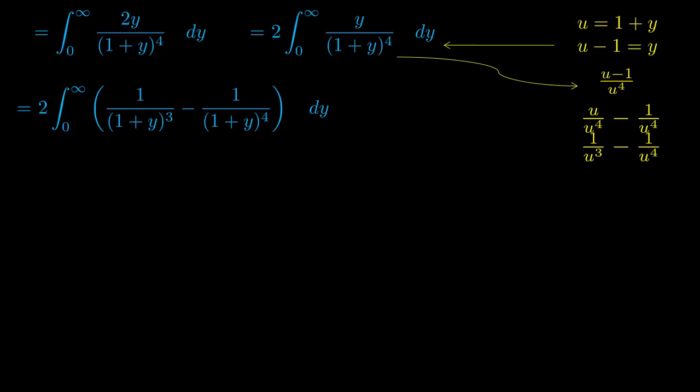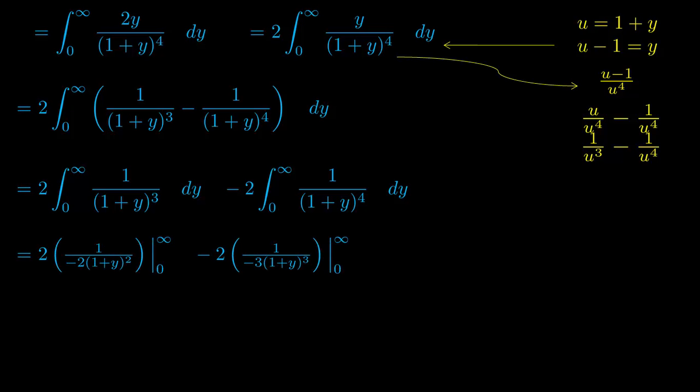Computing this is much easier now. You can split the integrals into two parts and solve them individually. Once you're done substituting the values back into the equation, you'll end up with 2 times (0 plus 1 half) minus 2 times (0 plus 1 third). That gives you a probability of one third, or 0.333, that the second rat outlives the first rat.